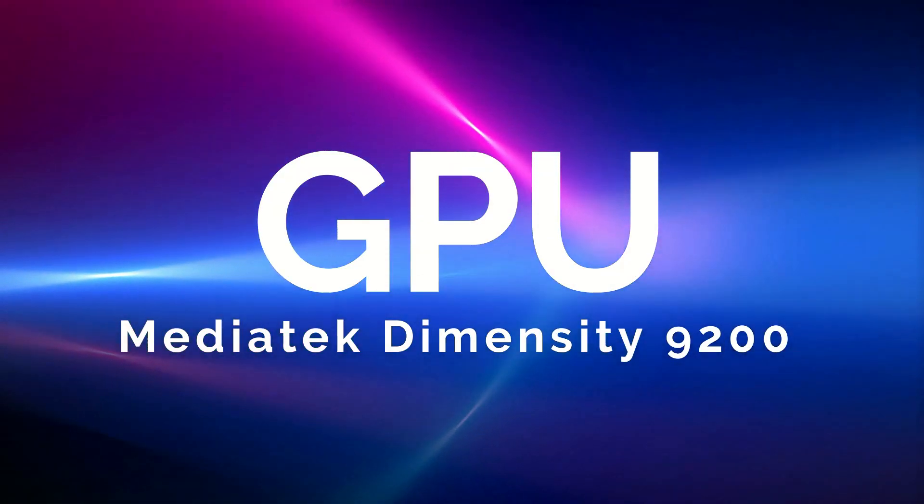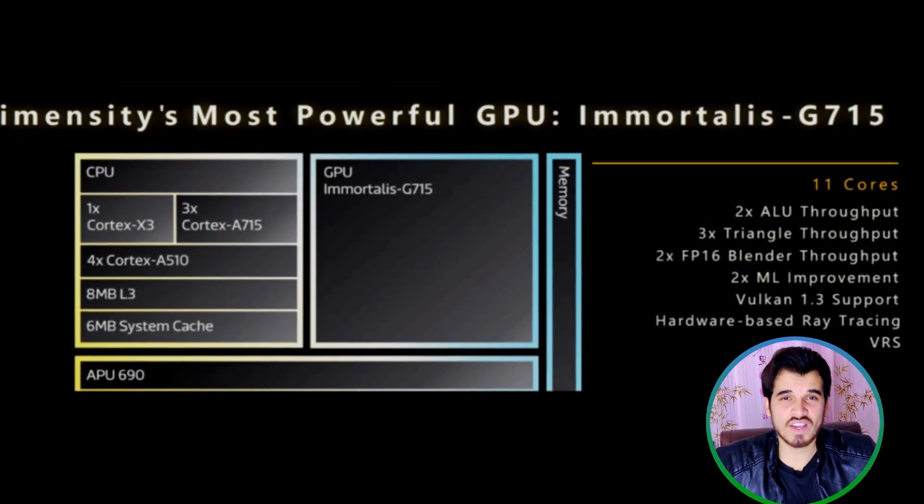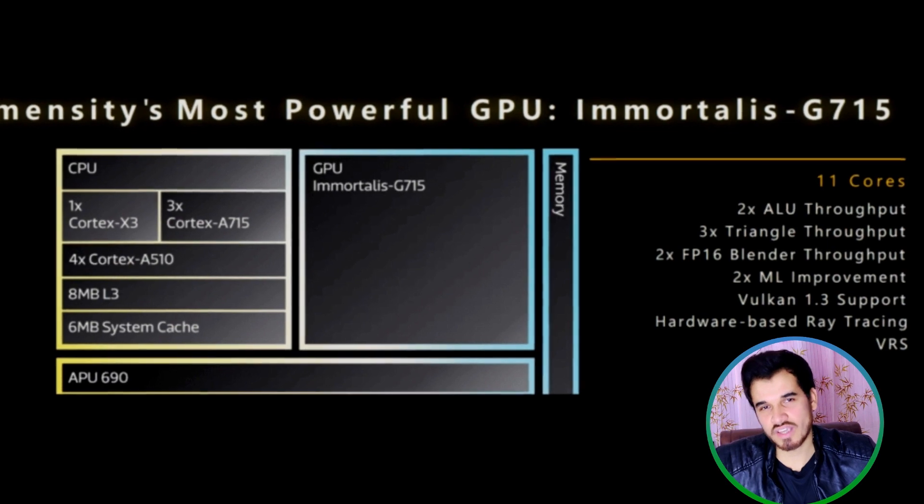Now let's talk about the GPU of the MediaTek Dimensity 9200. It features a new architecture-based GPU utilizing the Valhalla 3 technology and manufactured using a 4nm fabrication process, resulting in a powerful and power-efficient GPU. The GPU is the Mali-G715, the fastest in its lineup and capable of handling both PC and mobile games such as Free Fire, Call of Duty Mobile, Call of Duty PC, and many more. With faster GPU scores than the Qualcomm Snapdragon 8 Gen 2, users can expect a smooth gaming experience on this chipset.